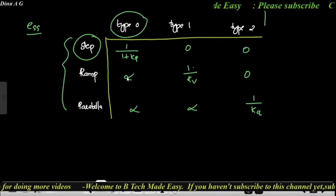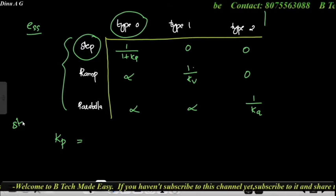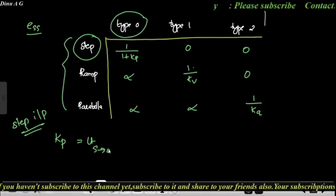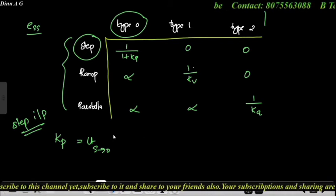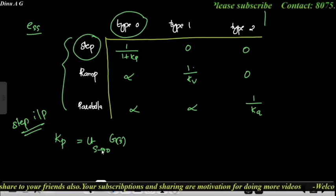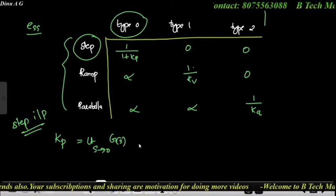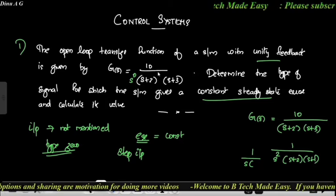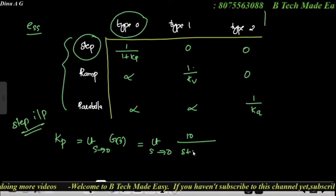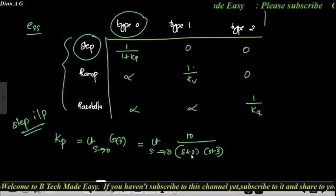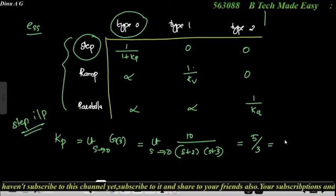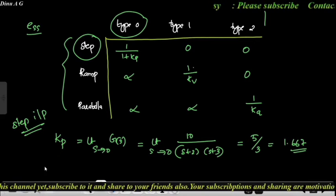The steady state error for step input is ESS = 1/(1 + Kp). First, find Kp. Kp = limit as s→0 of G(s)·H(s). Since it is unity feedback, H(s) = 1, so Kp = limit s→0 of G(s) = 10/[(s+2)(s+3)] evaluated at s=0 = 10/(2×3) = 10/6 = 1.667.